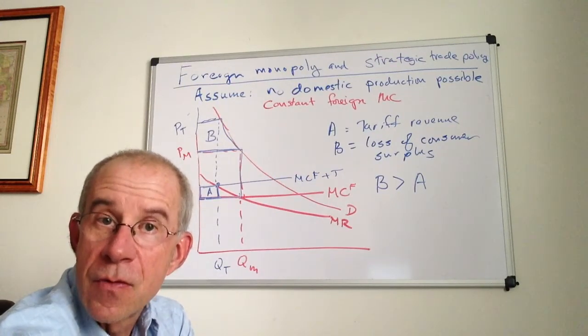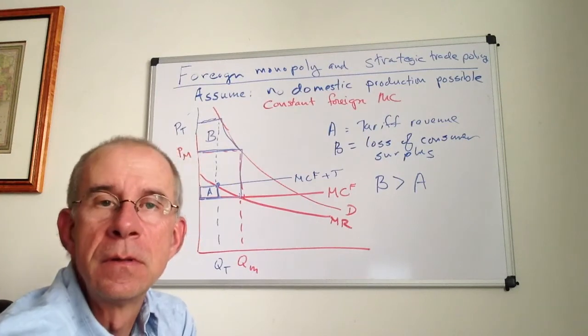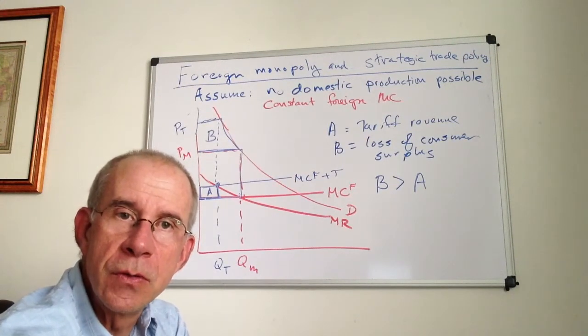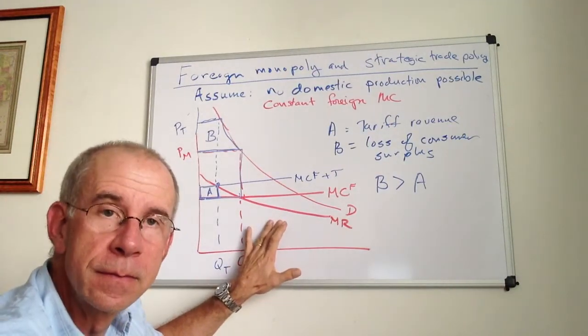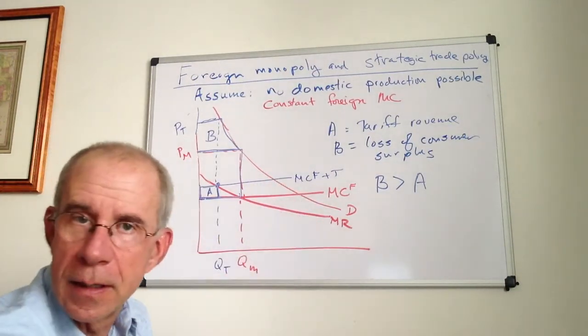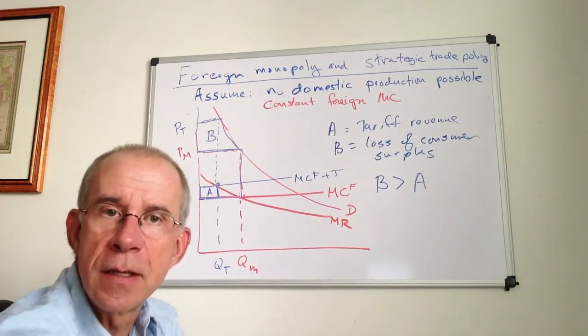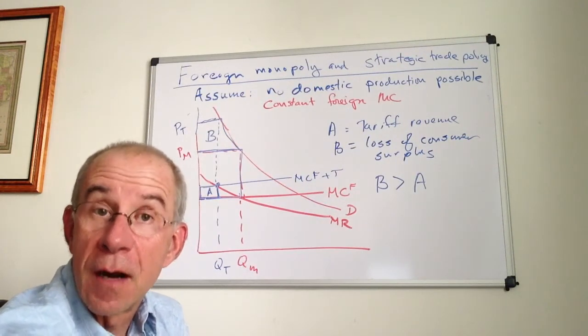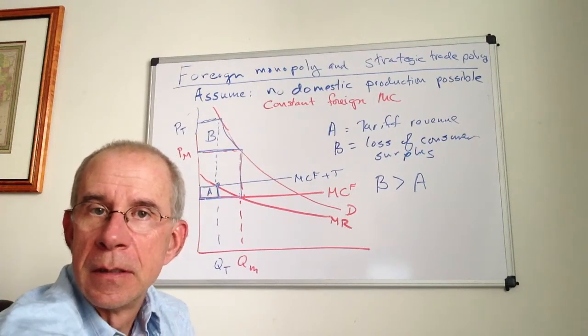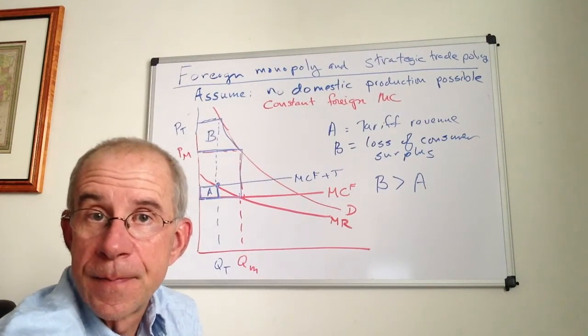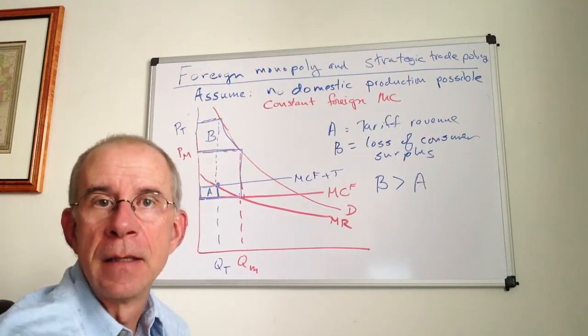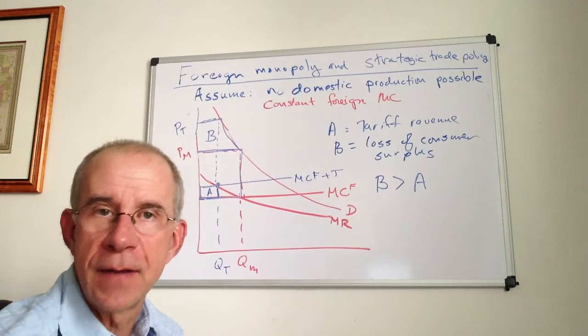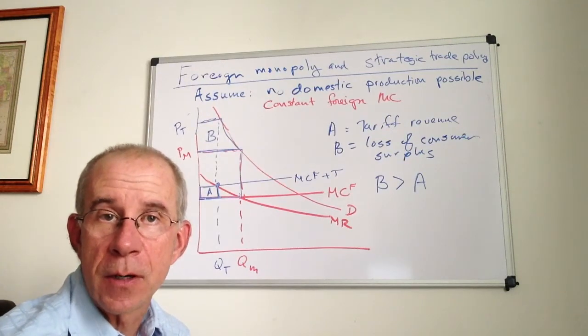In this case, the trade intervention one might want to pursue is very different than with the linear demand, which highlights the importance of government information about the market to effectively implement a strategic trade policy, a clever way of trying to take advantage of the circumstances in the international market.